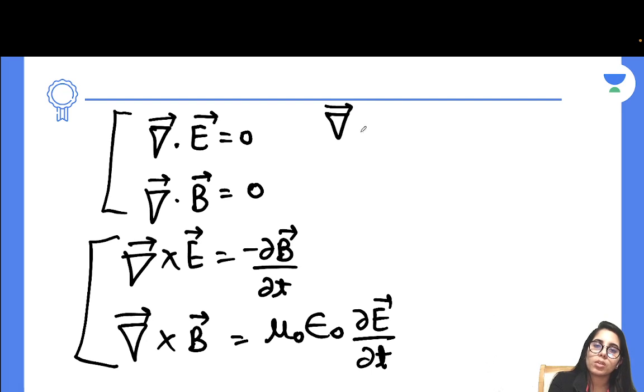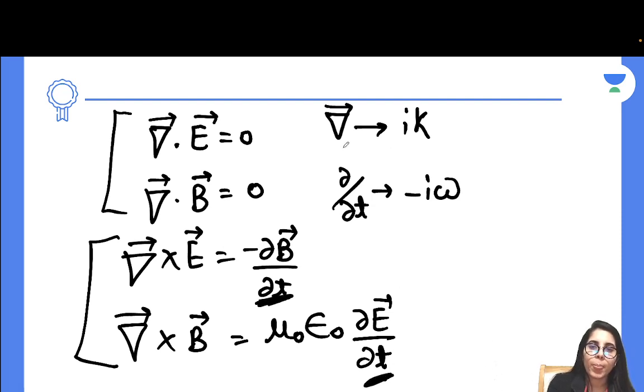You just have to replace del with iota K, and you just have to replace del over del T with negative iota omega. You are going to get your other equations in terms of K, omega, and the other parameters.